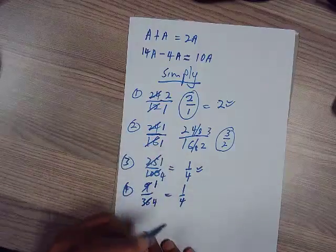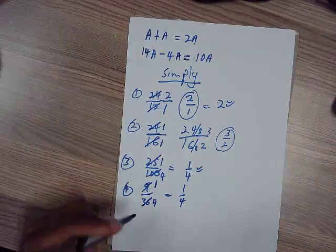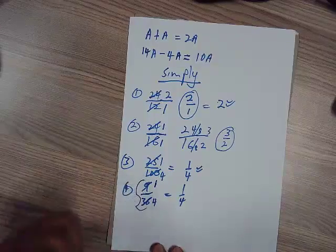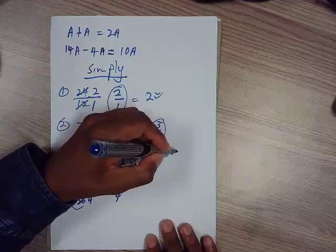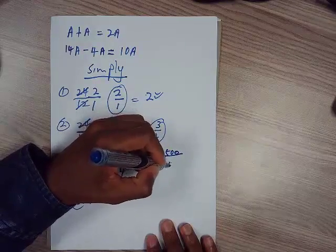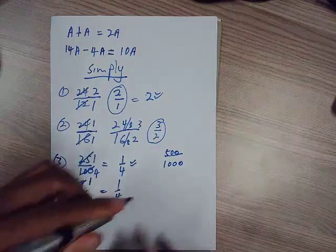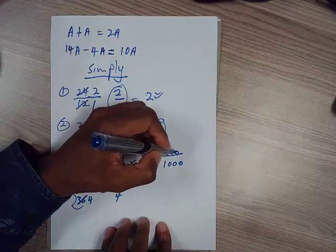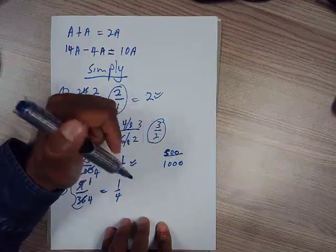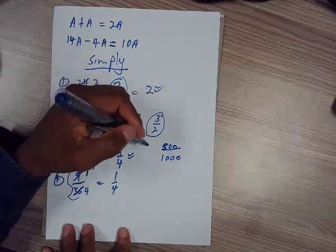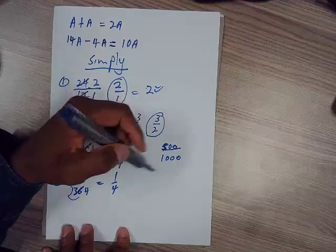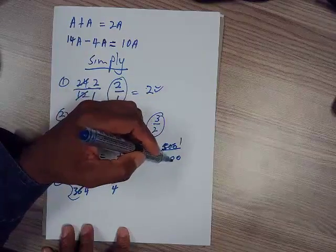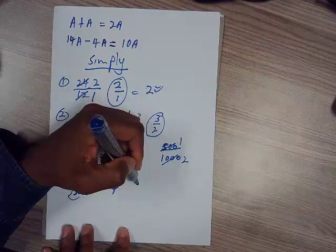So 500 over 1000. How many times does 500 go into 500? Once. Into 1000? Twice. So it's very easy to do this.